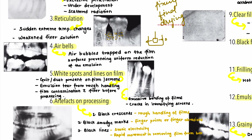The next error involves white spots or lines on the film. These can be due to dust on the film or screens — keep the dark room clean to prevent dust settling on the film, and periodically clean the screens with a cleanser. Another reason is emulsion tear from rough handling, which also leads to lines on the radiograph because the emulsion layer is torn off.